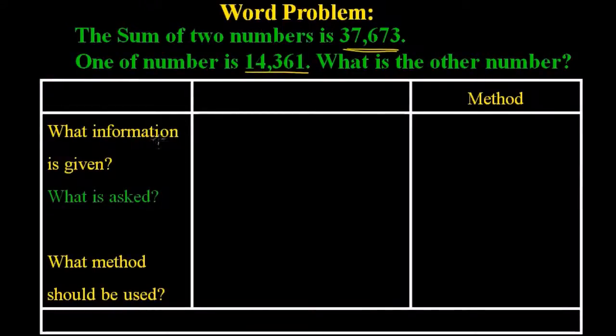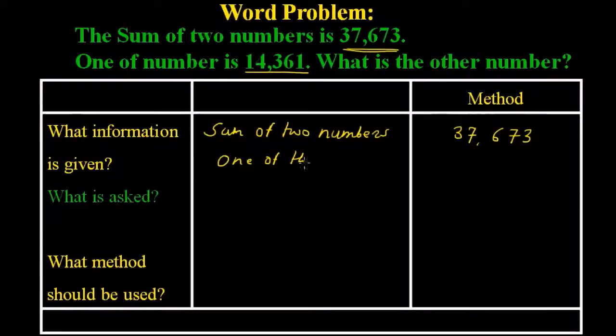While solving this word problem we should write the given information. First of all in the second column, what information is given? Just write sum of two numbers, and this is equal to 37,673. The other information is out of these two numbers, one of the numbers is 14,361.